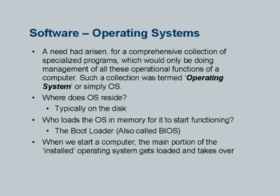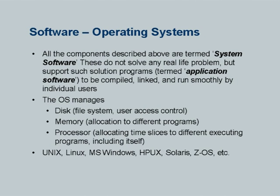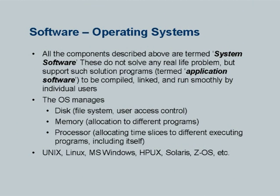The main portion of the installed operating system is the only thing that gets loaded when I start my machine. All these components — compilers, linkers, loaders, OS — are called system software, as opposed to application software. Note that none of these solve any real-life problem: they don't compute, don't plot graphics, don't calculate analytics. But without these utilities we cannot write programs in the modern day. Therefore system software is fundamentally required to do any good application software. The operating system manages the file system and user access control, manages memory by allocating different memory to different programs, and manages processor time by allocating time slices to different users. Examples of operating systems include Unix, Linux, MS Windows, HP-UX, Solaris, z/OS, etc.